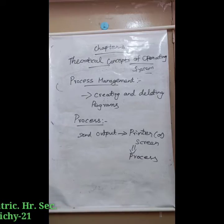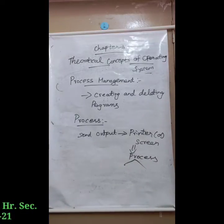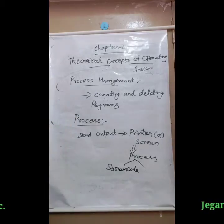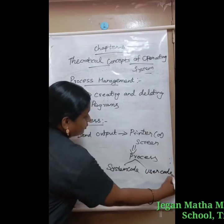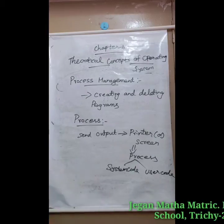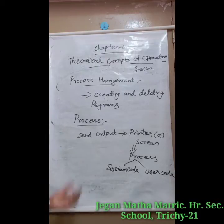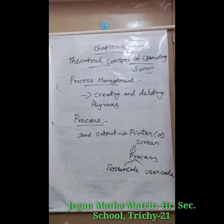Processes are classified into two categories. One is operating system processes, which are executed by system code. Another one is user processes, which are executed by user code. All these processes can potentially execute concurrently on a single CPU. Now, let us see some of the algorithms that are mainly used to allocate the job to the processor. We have four algorithms.